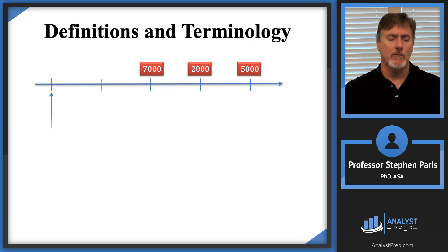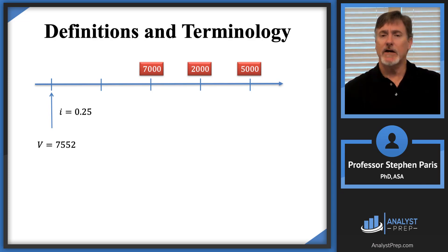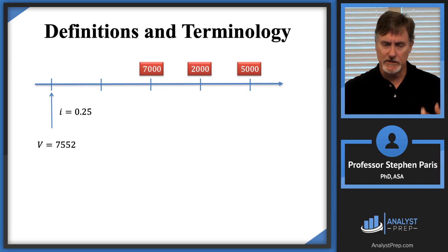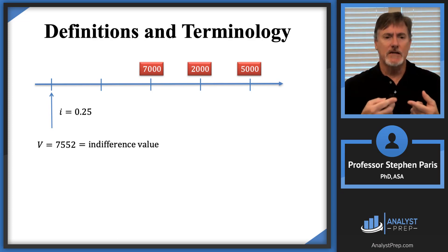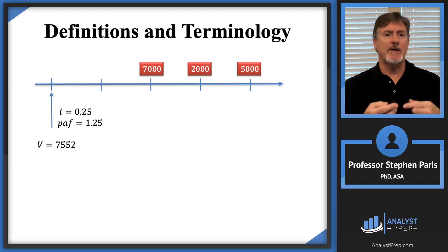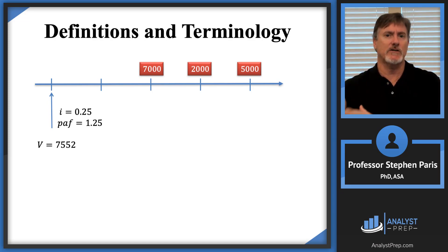The periodic effective interest rate in this case is 25%. The value of this annuity at that valuation date is $7,552. Don't worry about how I got that number — the point I'm making here is what it means to be the value of an annuity. It's an indifference value: I should be indifferent to receiving $7,552 now versus receiving $7,000, $2,000, and $5,000 later.